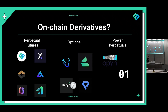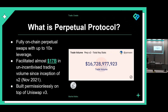For perpetual futures, some of the leading ones are Perpetual Protocol, dYdX, Kwenta, GMX, Drift, and Gains Network. For options there are Dopex, Lyra, Hegic, and Premia. For power perpetuals we have Opyn and 01 Exchange. On Opyn you can trade a power perpetual that gives you exposure to the price of Ethereum squared — if Ethereum goes up 200%, your PnL goes up much more because the function is the price squared. On 01 they have a similar power perpetual but for Solana.